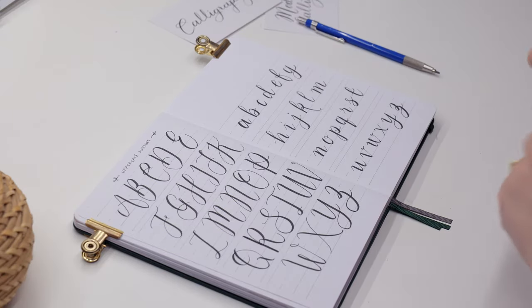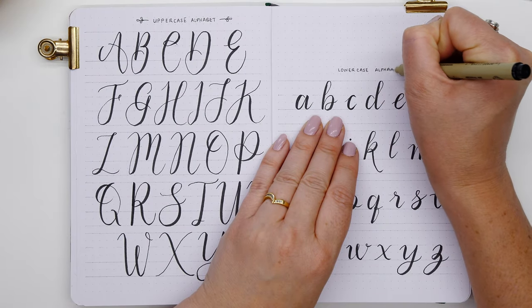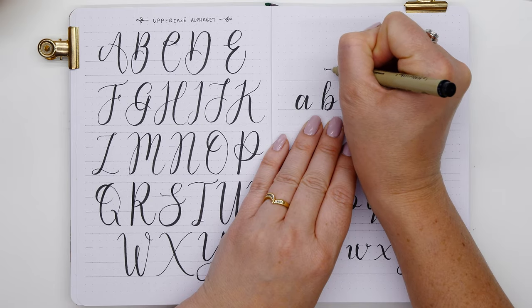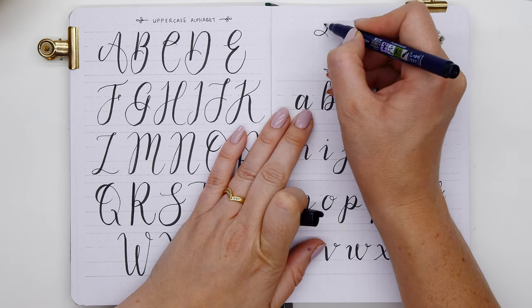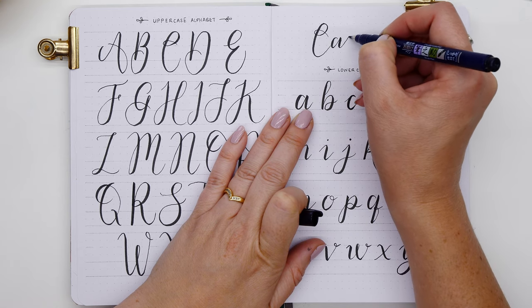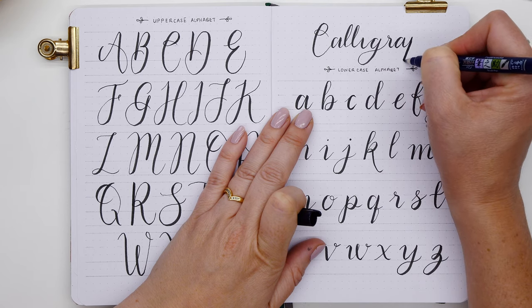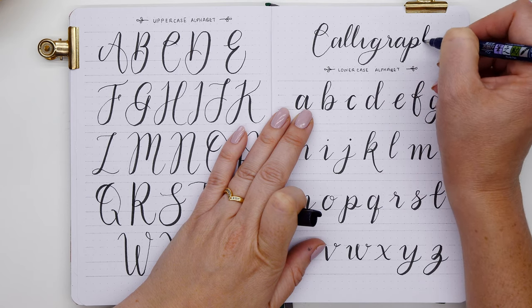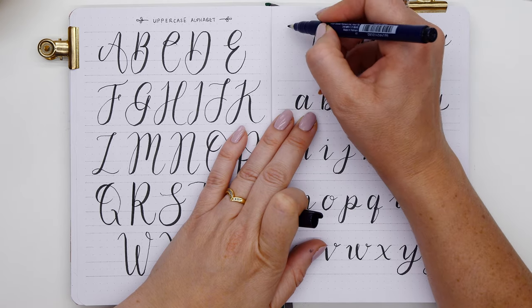That completes our lowercase alphabet, so you now have a reference for the entire alphabet, both uppercase and lowercase. It's a great guide to refer back to in your bullet journal to remind you of your font, and then it's great for practicing. To finish off, I'm just titling my page with a calligraphy font, connecting those capital letters with the lowercase letters that we just practiced.